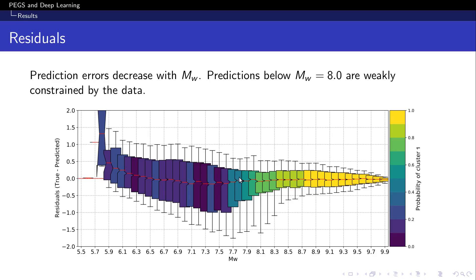We note two things here. One is that the probability of belonging to the unbiased cluster is around 50% at 7.7, and it drops below 20% at 7.6. So we can therefore place a limit on the lower magnitude to which the data are sensitive or partially sensitive to, somewhere between 7.7 and 8. Second, the uncertainties of the predictions decrease with magnitude.